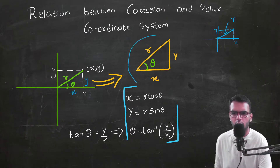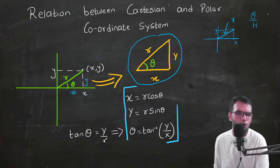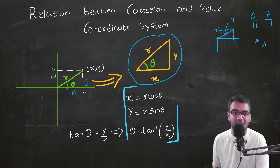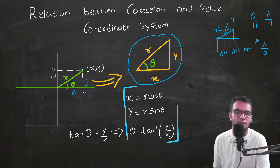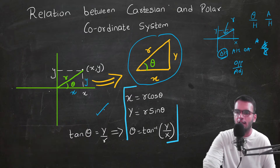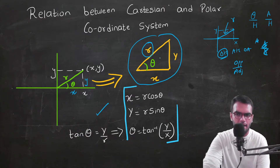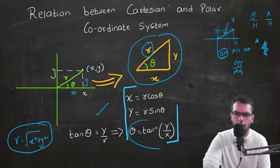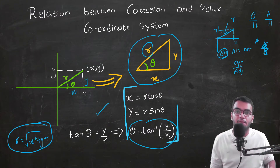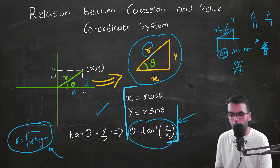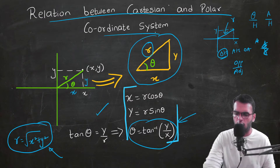Applying trigonometry: sin θ = opposite/hypotenuse, cos θ = adjacent/hypotenuse, tan θ = opposite/adjacent. From this triangle, r = √(x² + y²) by Pythagoras' theorem, and θ = tan⁻¹(y/x). These are the relationships between the Cartesian and polar coordinate systems.